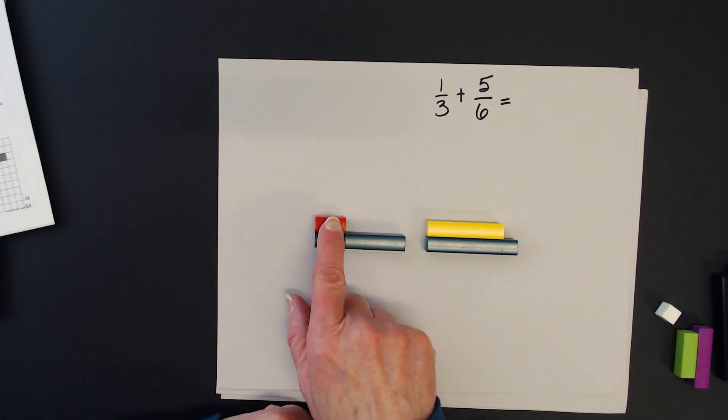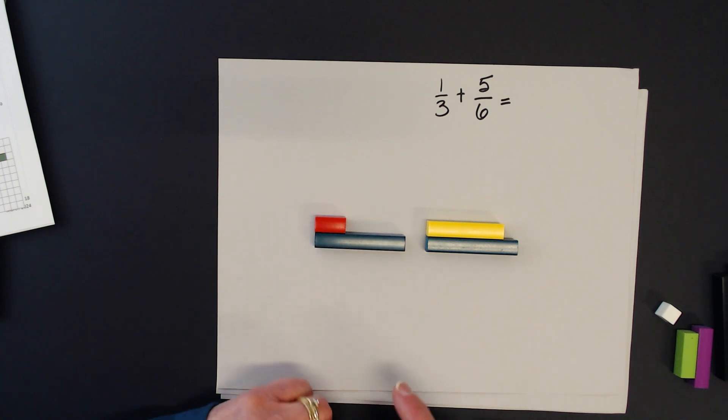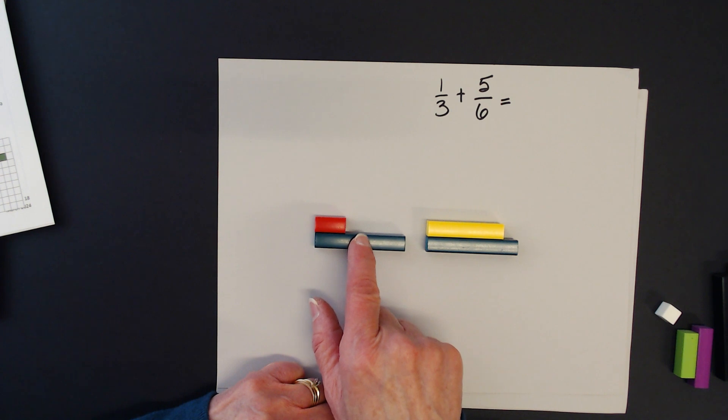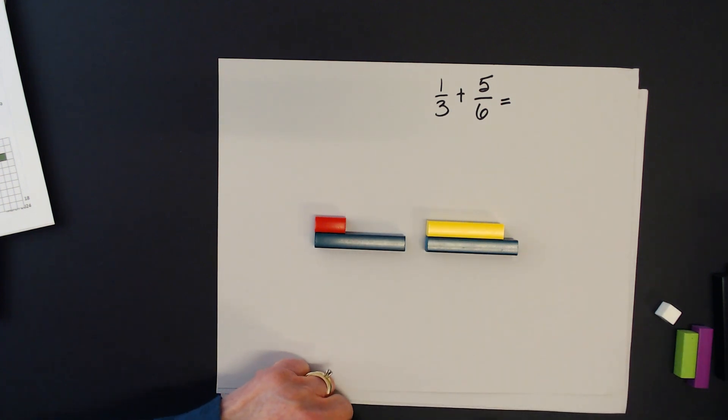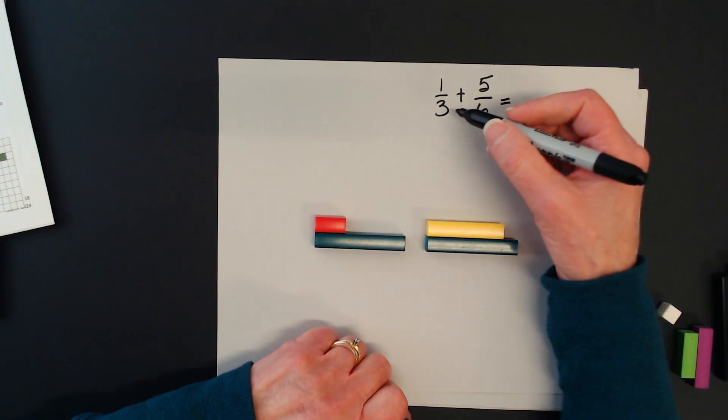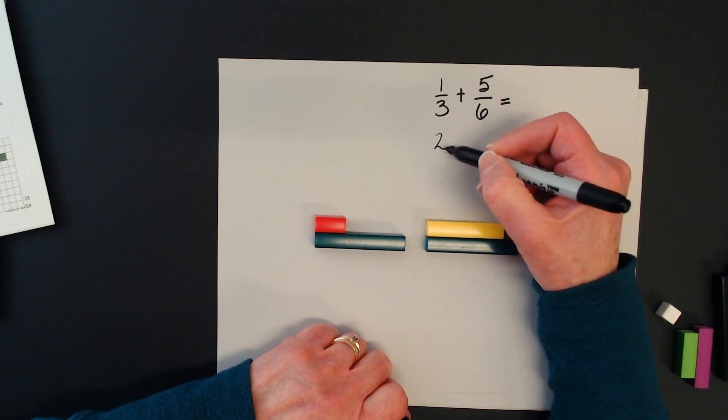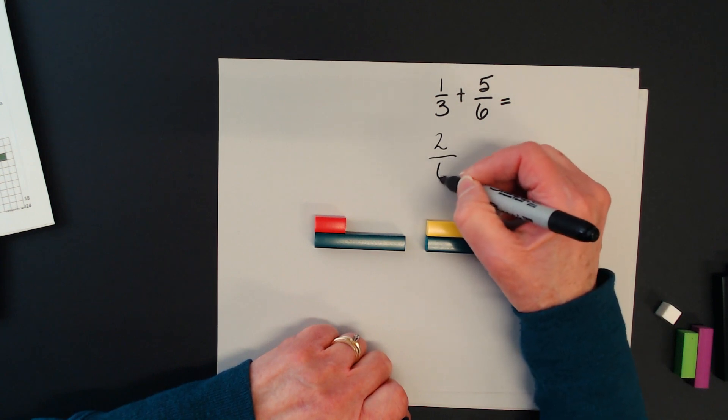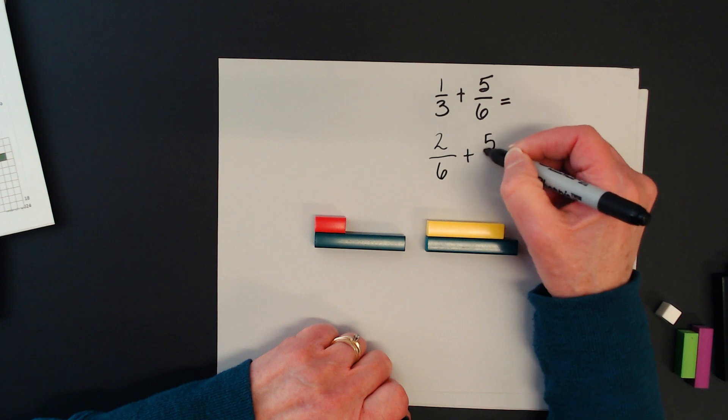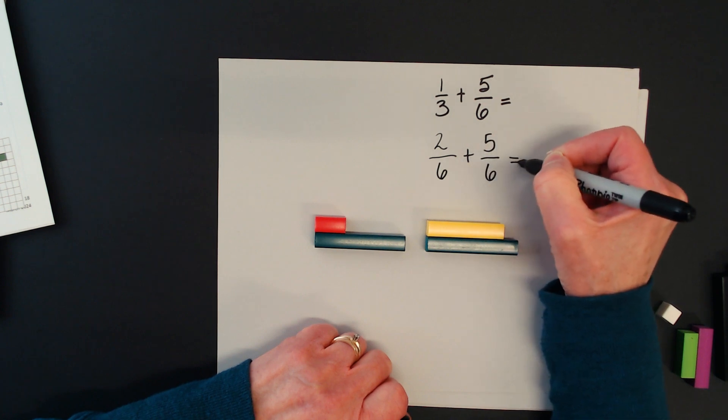So here I have 1/3, which would also be equivalent to 2/6 plus 5/6. So if I was to rewrite this, I could rewrite it as 2/6 plus 5/6.